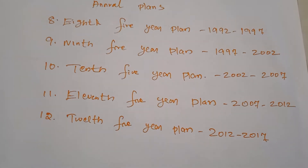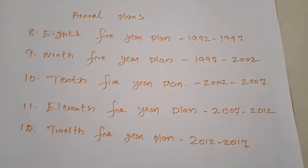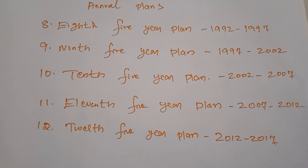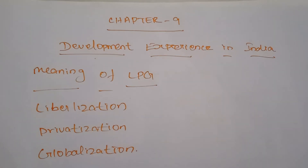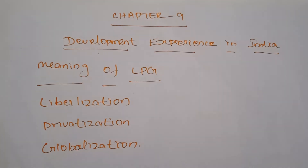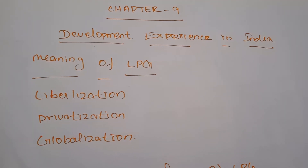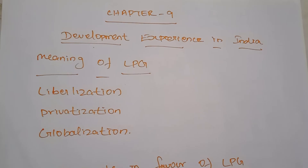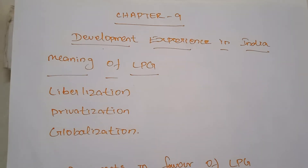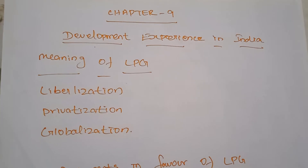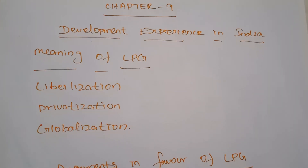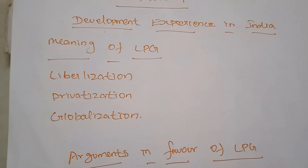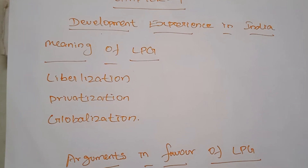The fourth five-year plan had two main objectives: growth with stability and progressive achievement of self-reliance. Although self-sufficiency had been achieved in the first five-year plan, growth with stability and further self-reliance remained priorities. The target of the fifth five-year plan was to achieve a growth rate from 4.8 percent, which was reduced to 4.4 percent.